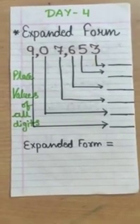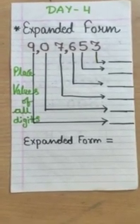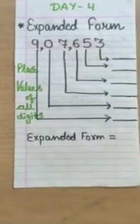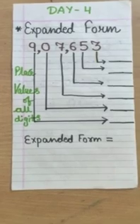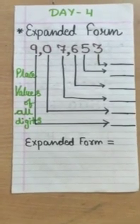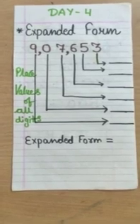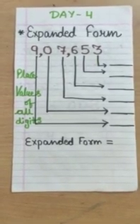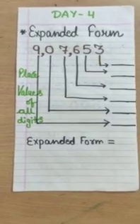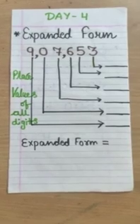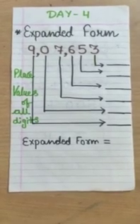This is our Day 4 on expanded form. If we have any number like 907653, we need to write expanded form. But how we will write expanded form? If you have seen any rubber band, if we stretch it from both sides, its form is just expanded. Now the same but we can't do it with numbers by stretching it.